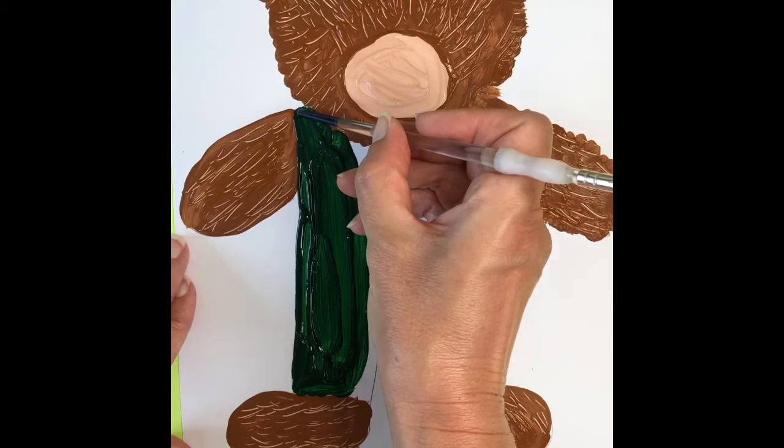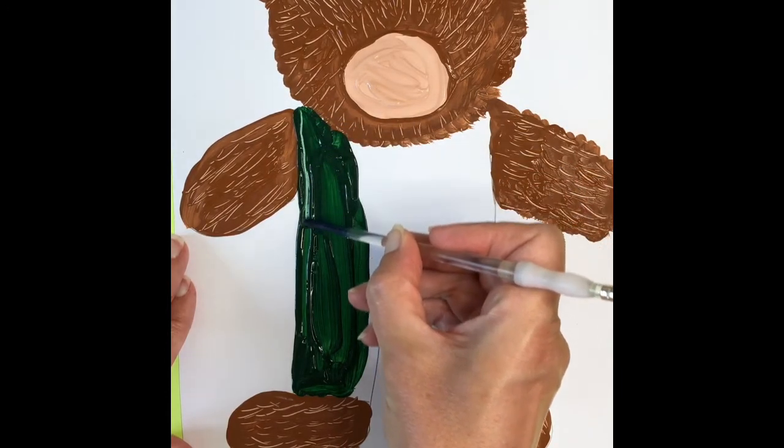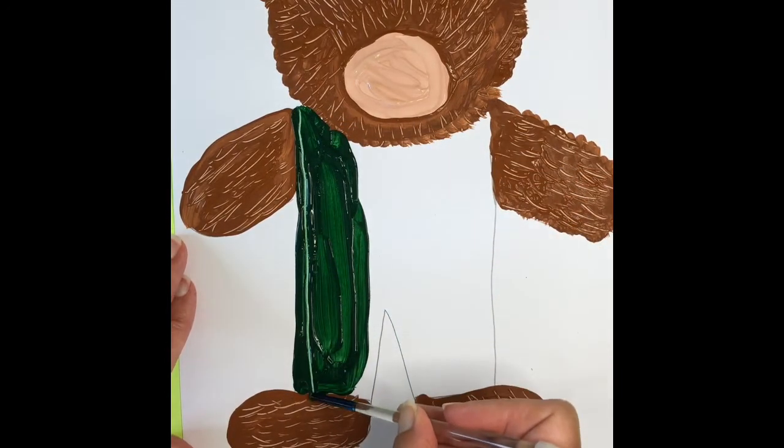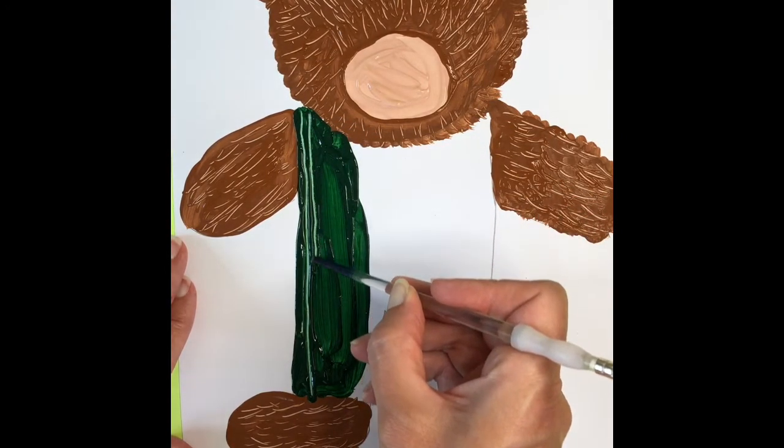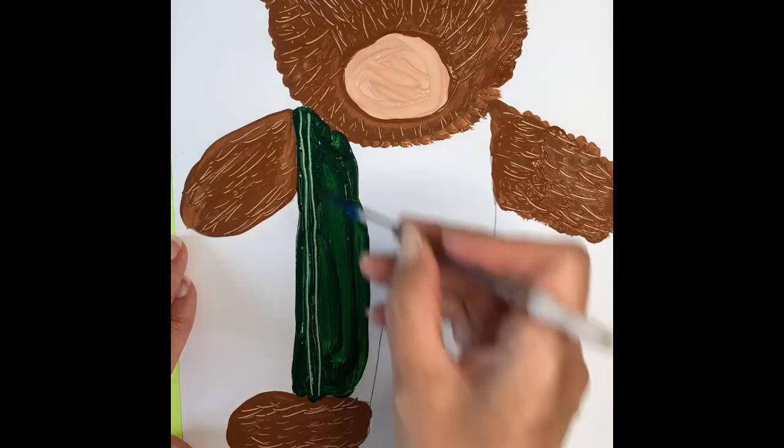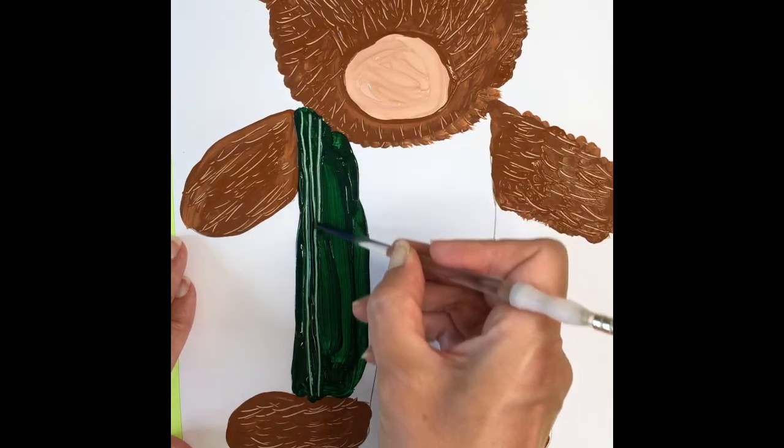We're going to make a line that goes all the way down his overalls. Because corduroy pattern or texture is kind of wavy like a potato chip if you looked at it under a microscope. So we're going to make lines that go from the top all the way to the bottom.